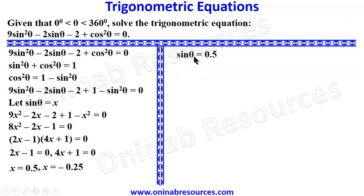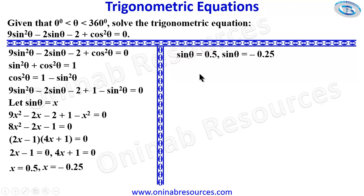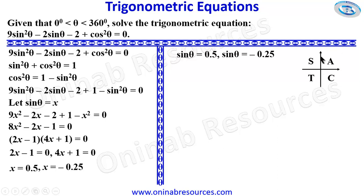So we now have sinθ = 0.5 and sinθ = -0.25. We go ahead now to find the values of θ within 0° and 360°, looking at the trigonometric ratios of the unit circle.